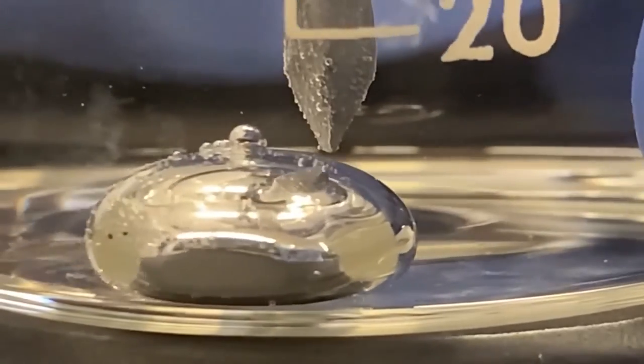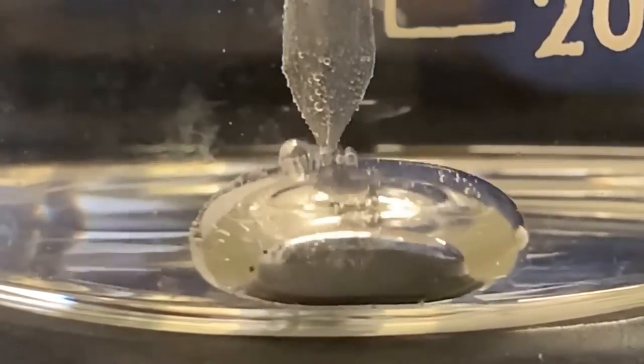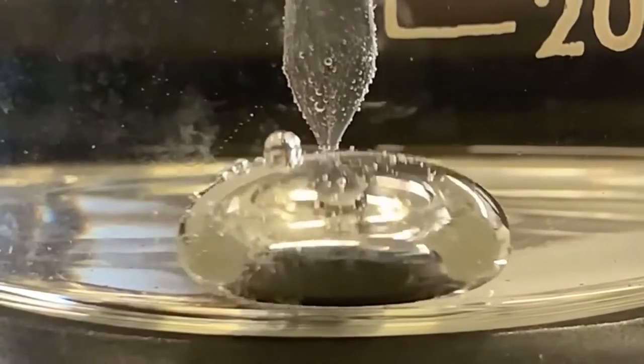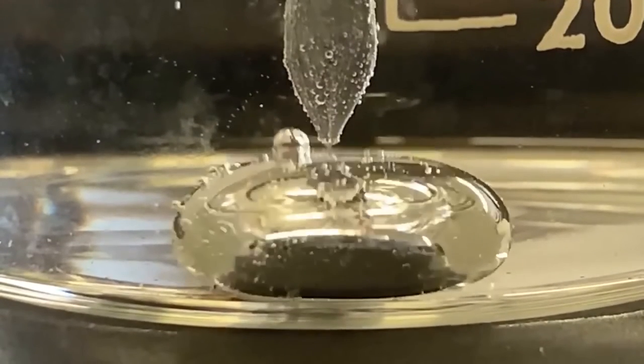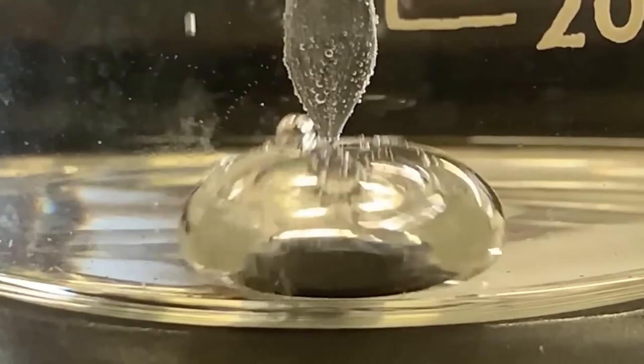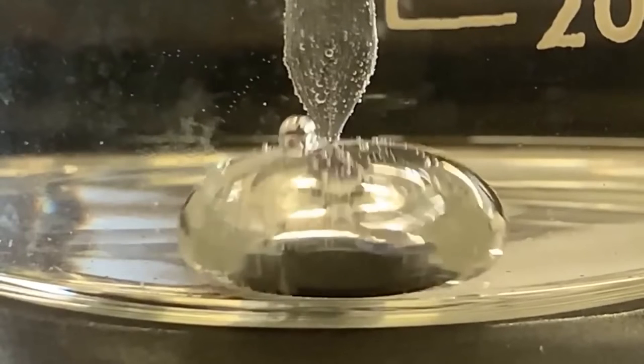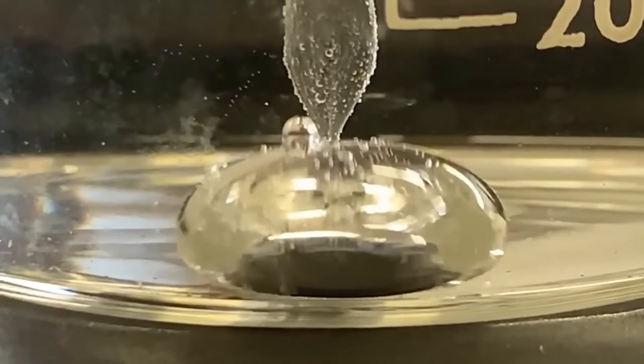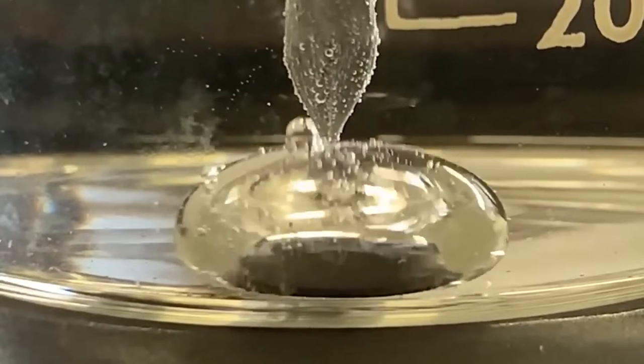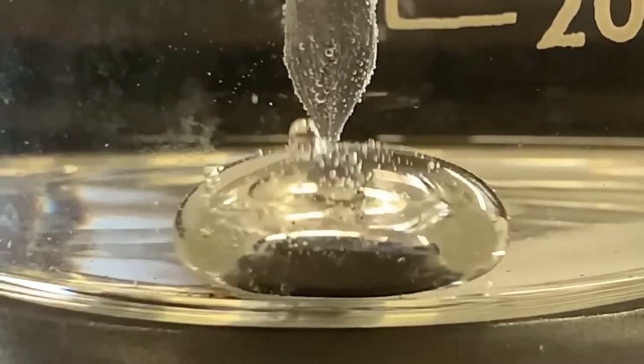If the metal is positioned just right, then an interesting situation occurs. As the droplet flattens, it moves away from the metal and no longer touches it. But because it no longer touches the metal, the droplet rebounds to its original shape. But this causes the droplet to flatten out again.